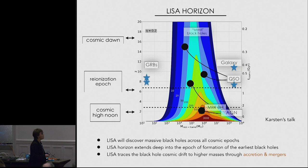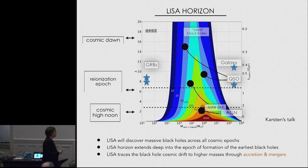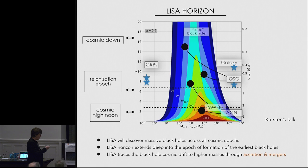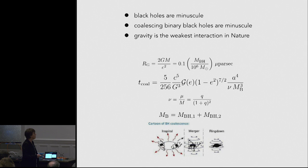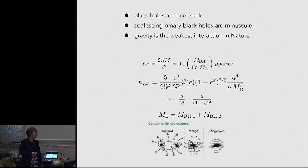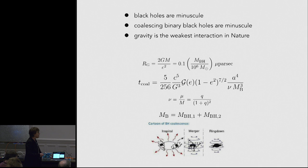LISA traces the black hole cosmic drift and the cosmic assembly of galaxies. Black holes are minuscule because their horizon for a typical LISA black hole is a fraction of a microparsec. Coalescing binary black holes in the LISA band are minuscule because, depending on the mass and the redshift, we see thousands or fewer cycles during the inspiral, merger, and ringdown, so we can probe out to 100 Schwarzschild radii.